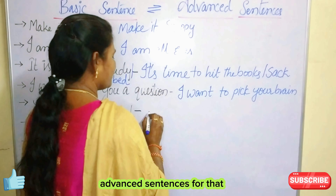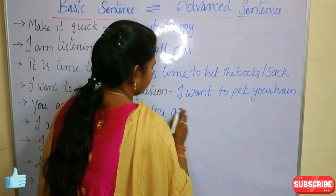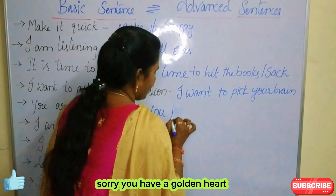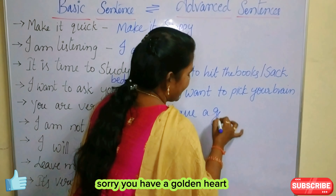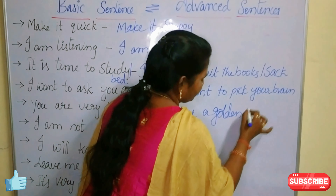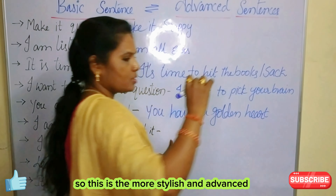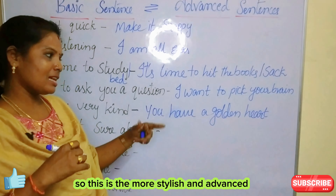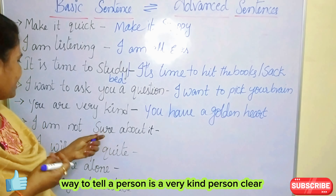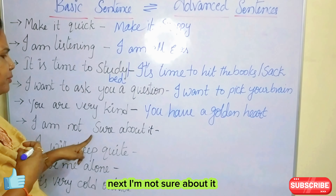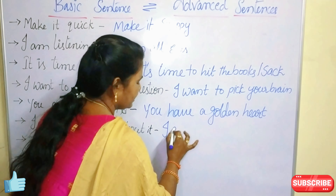Next one: 'You are very kind.' The advanced sentence for that is 'You have a golden heart.' This is the more stylish and advanced way to tell a person they are a very kind person.